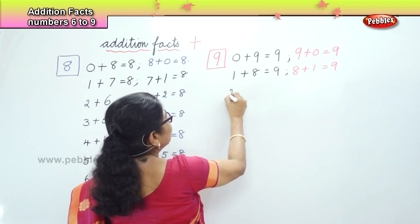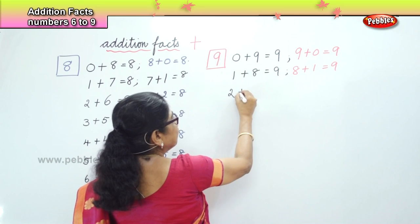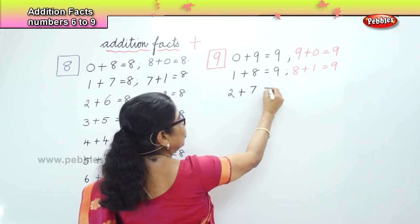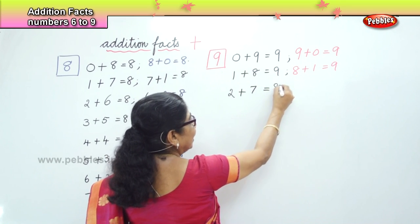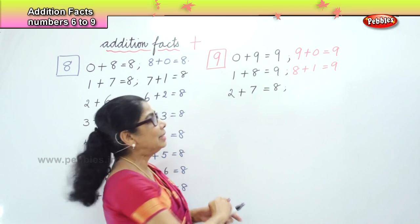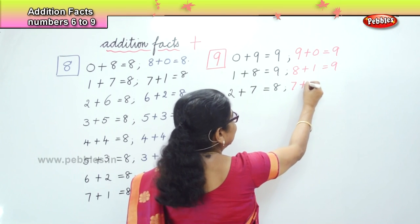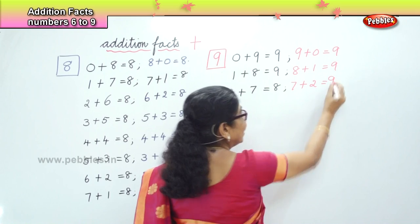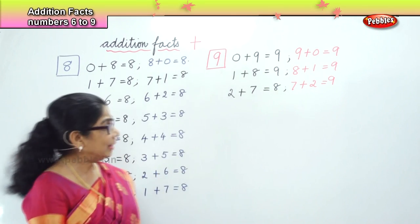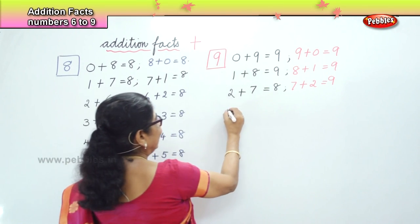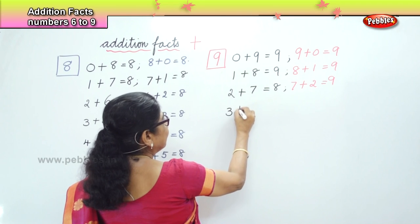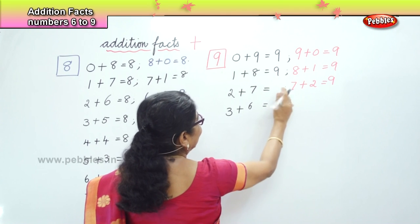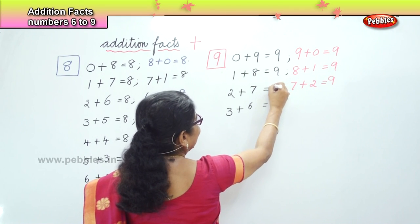Next is 2. 2 plus 7 is equal to 9. And the reverse: 7 plus 2 is also equal to 9. Then 3 plus 6 is equal to 9.